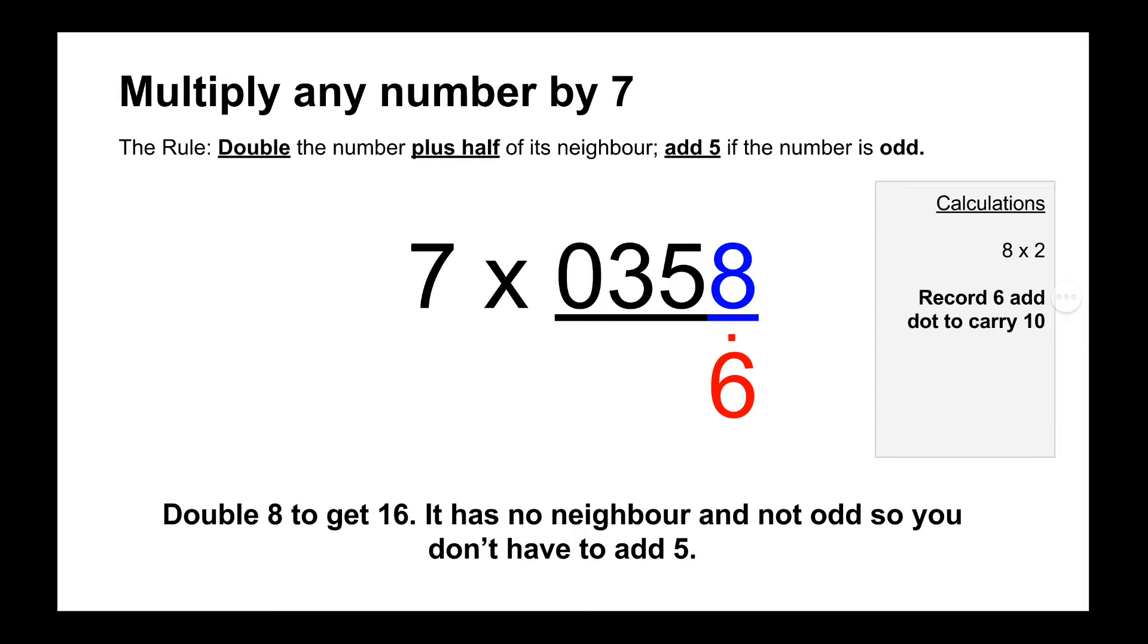So starting with the first number which is 8, we double that to get 16. And because 8 is even we don't have to add 5, and it doesn't have a neighbor, so we simply record the result of 8 times 2, which is 16. So we record 6 and then add a dot above it to represent the carry 10.